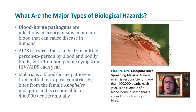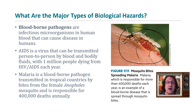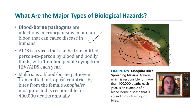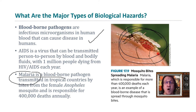Bloodborne pathogens come from direct contact with animal or human blood, or contact with vectors like mosquitoes and flies that transmit blood between hosts. These diseases are most prevalent in poor environments where insect control is minimal, particularly in developing countries in warm, rainy areas where insects thrive. Ancient diseases like malaria and sleeping sickness remain among the biggest killers in the world and still cannot be adequately treated due to their prevalence and the high cost of treatment.